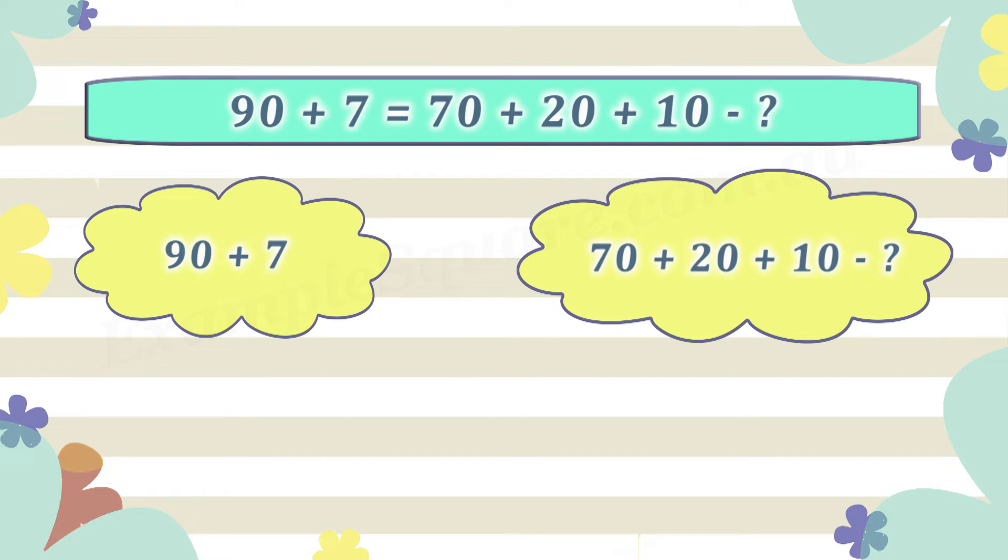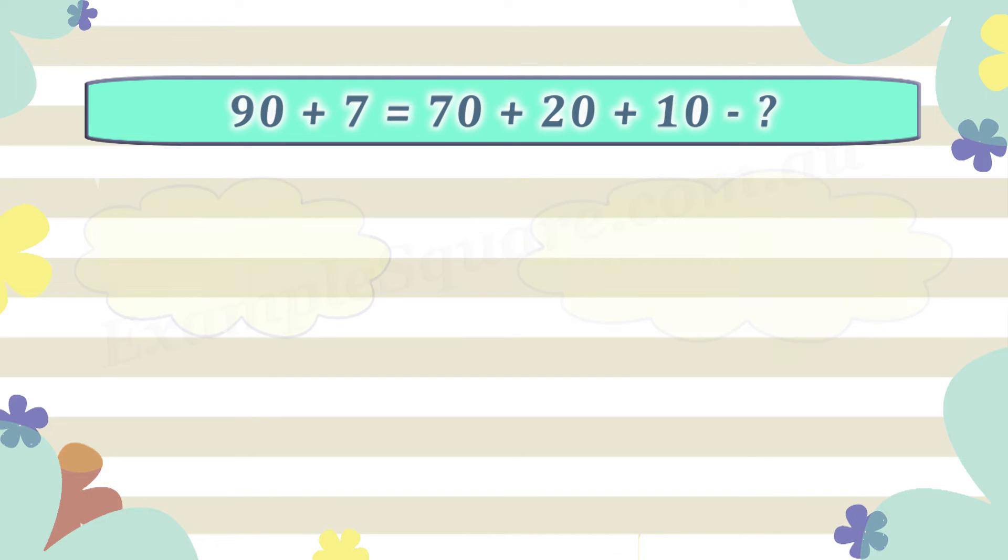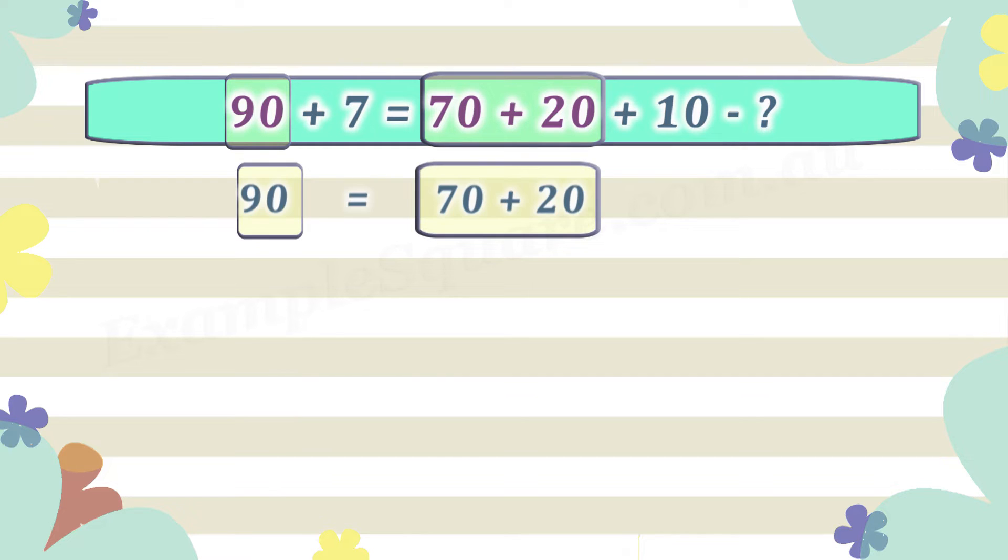One way to approach this problem is to observe that 90 on the left side equals 70 plus 20 on the right side. Considering that 90 on the left side equals 70 plus 20 on the right side, that implies these parts are already in balance.